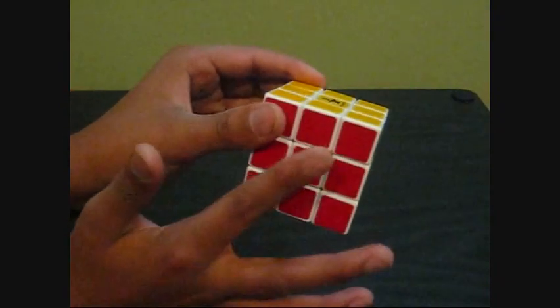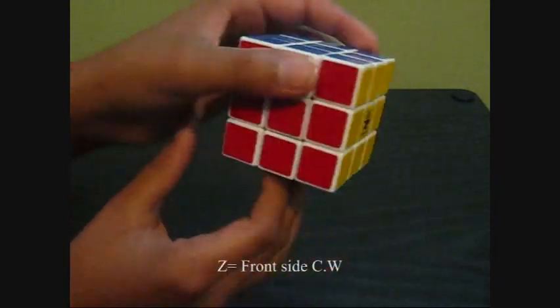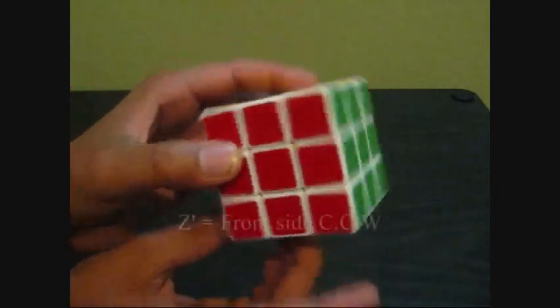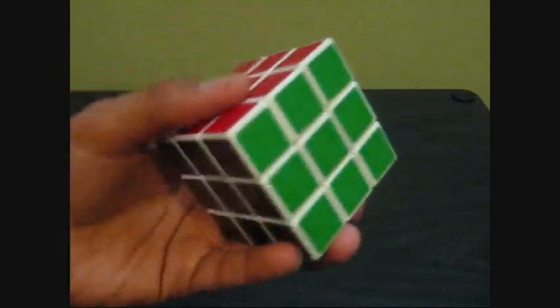And the other one is Z, which is the front side. If I say Z, clockwise. Z prime, counterclockwise.